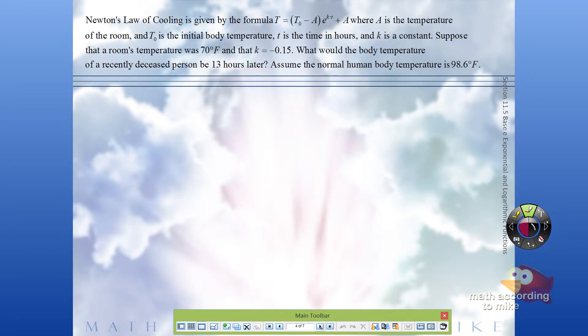Newton's law of cooling is given by the formula where A is temperature of the room, T naught is the initial body temperature, lowercase t is the time in hours, and k is a constant. I forgot to mention that T is the current body temperature, or you could say temperature after time little t.